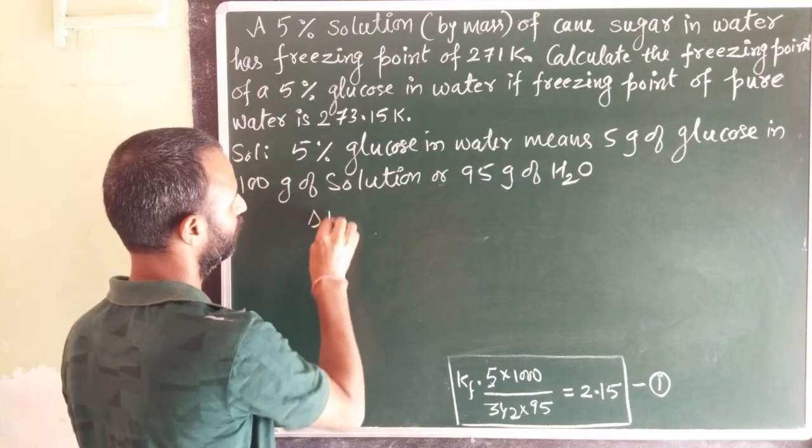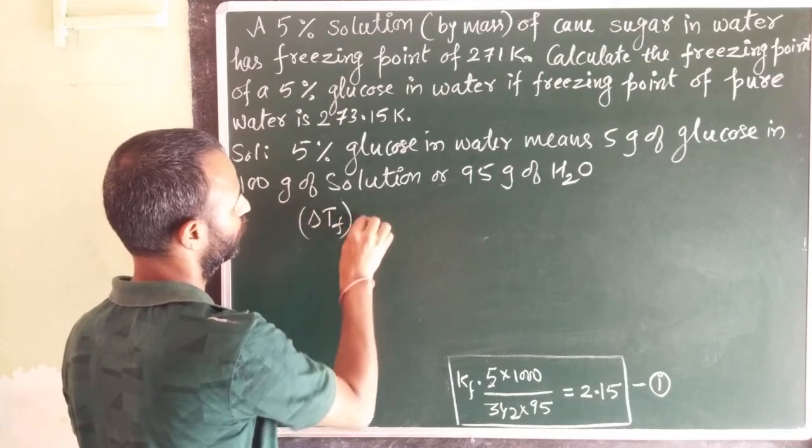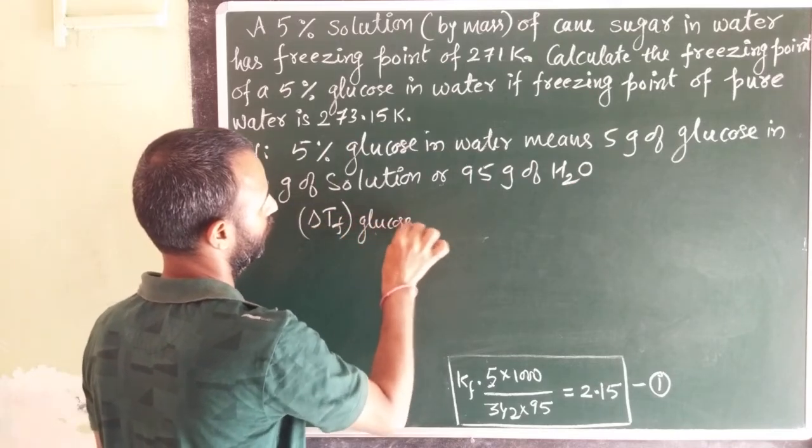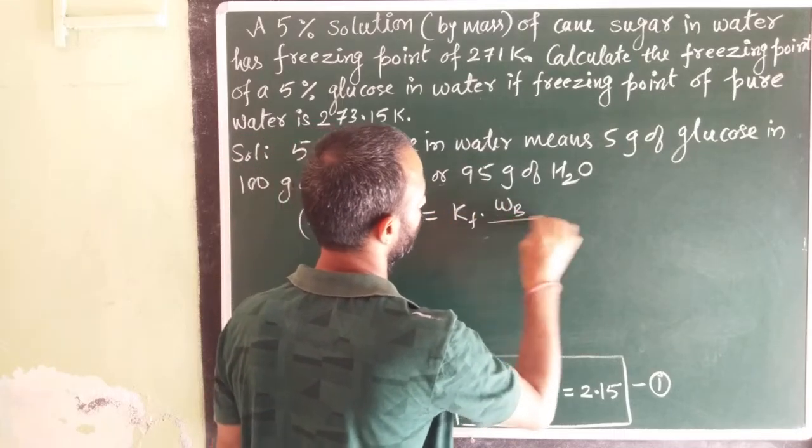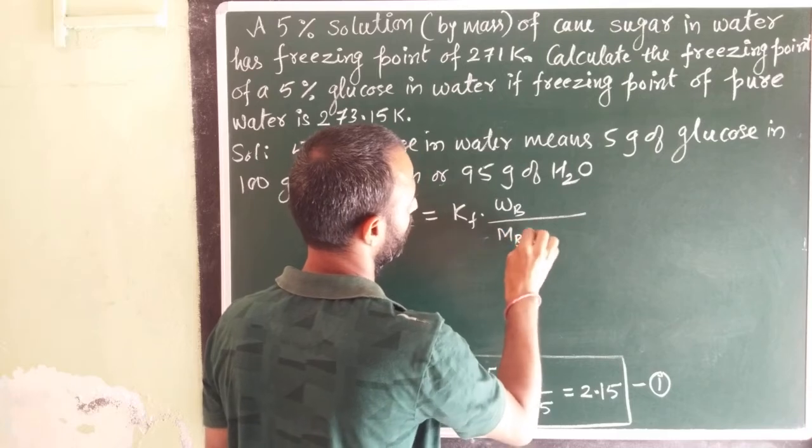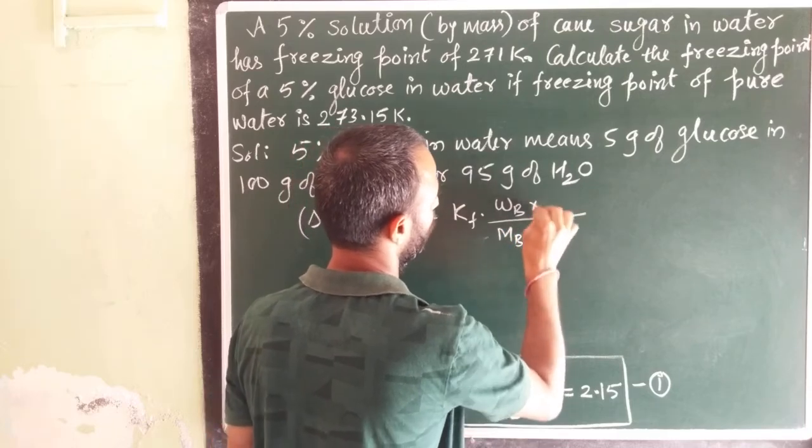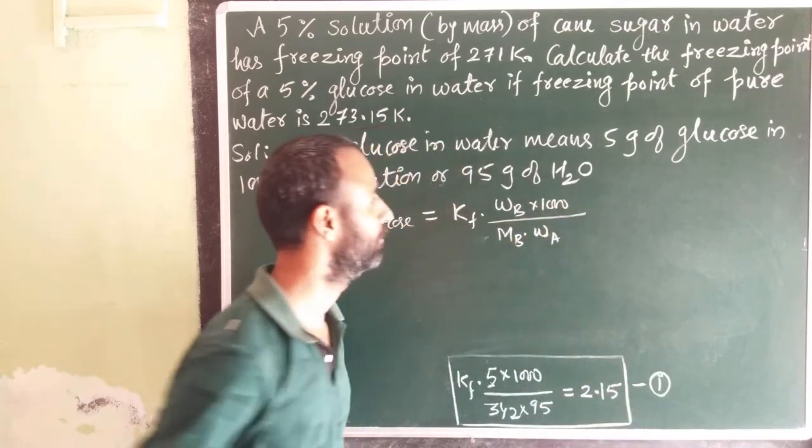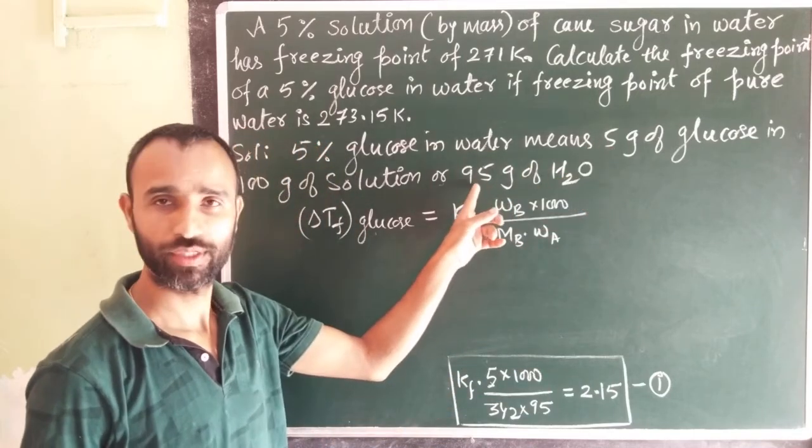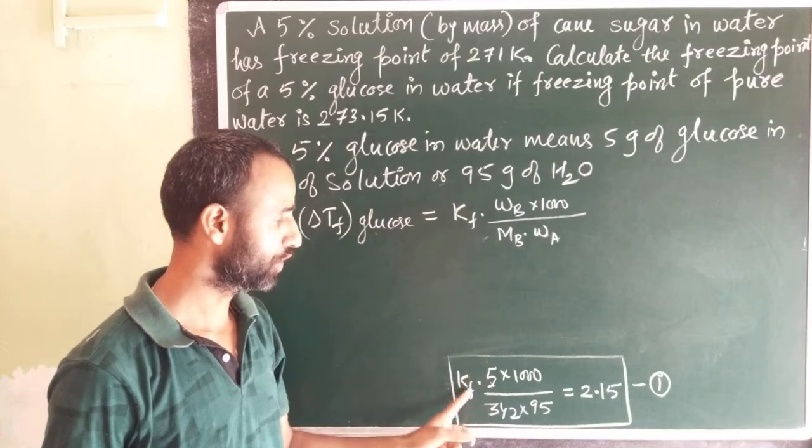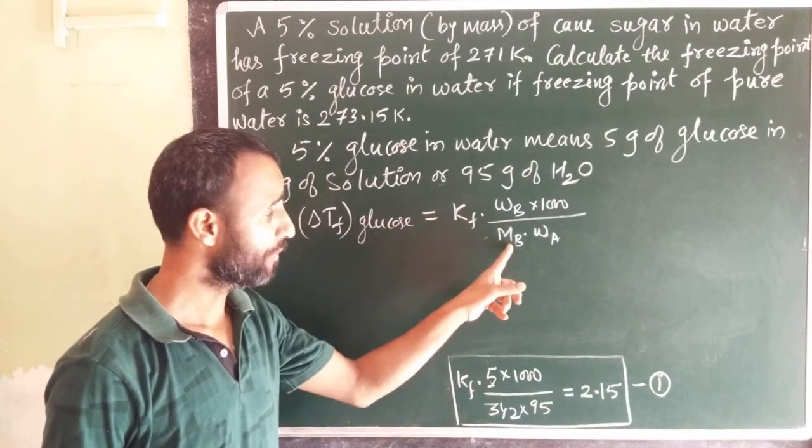Now delta Tf of glucose is equal to Kf WB by MB, WA into 1000. WB and WA same 5 and 95. Kf, it is for water. Then MB.